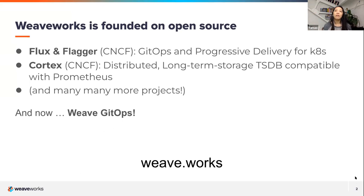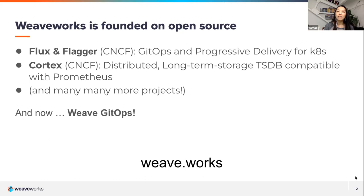Our company has really been founded on open source with many projects out there. Many of you may have heard of WeaveNet from the early days. Now we've really focused primarily on Flux and Flagger. Flux is really the project we created for our own particular needs, but it was the project that sparked the term GitOps, which our CEO coined and put out there — and it's pretty much taken off like crazy.